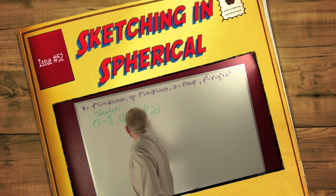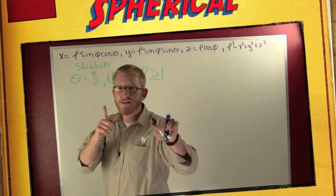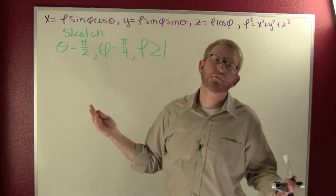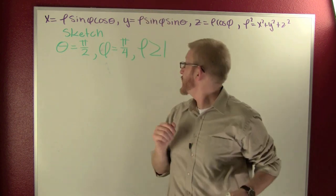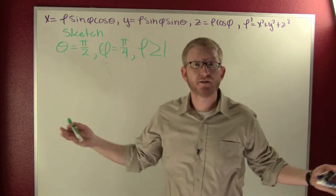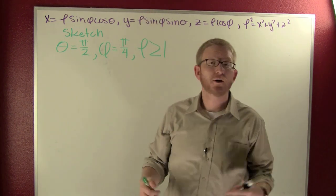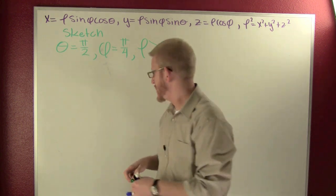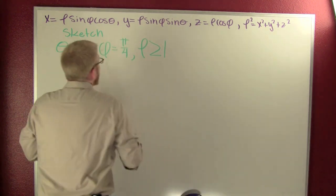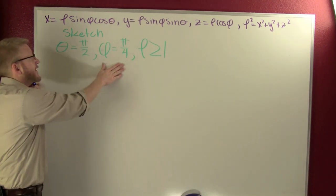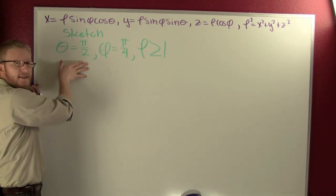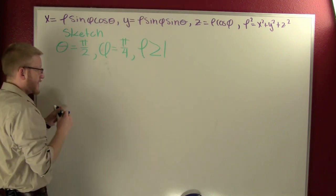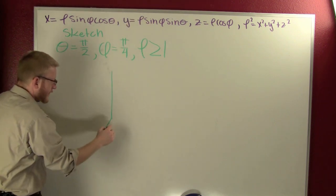In this next problem, they give us some spherical parameters and they want us to graph this thing in spherical coordinates. They have a fixed phi, a fixed theta, and they say rho is bigger than one.